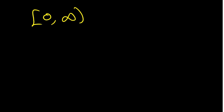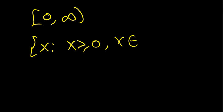Last example: [0, +∞) — zero included, going to positive infinity. In set builder notation: x such that x ≥ 0, and x is a member of real numbers. Since x is greater than or equal to zero, we go from zero all the way to positive infinity.